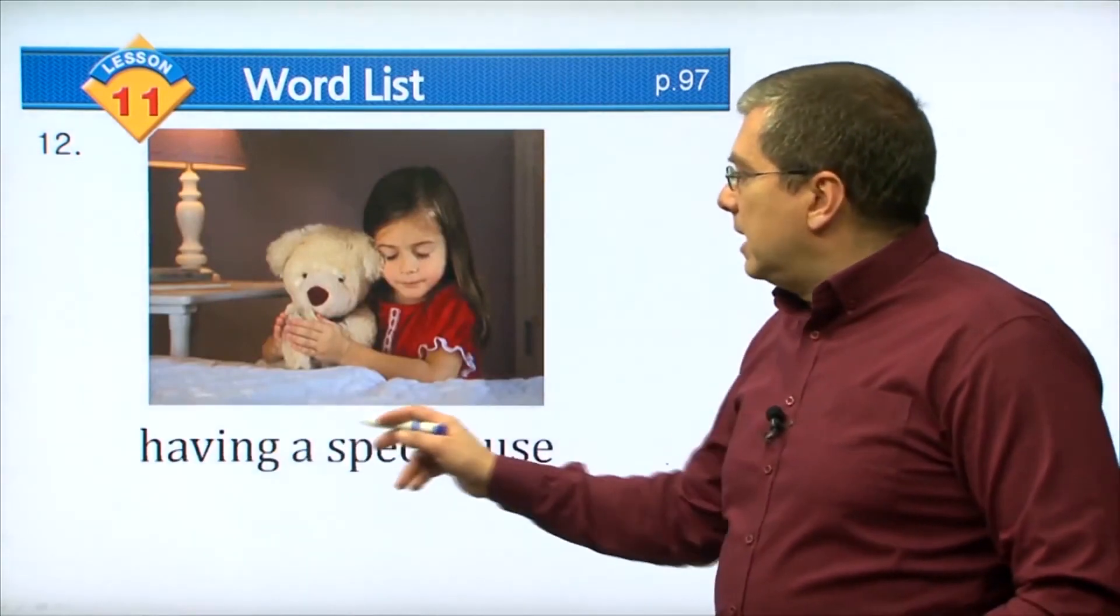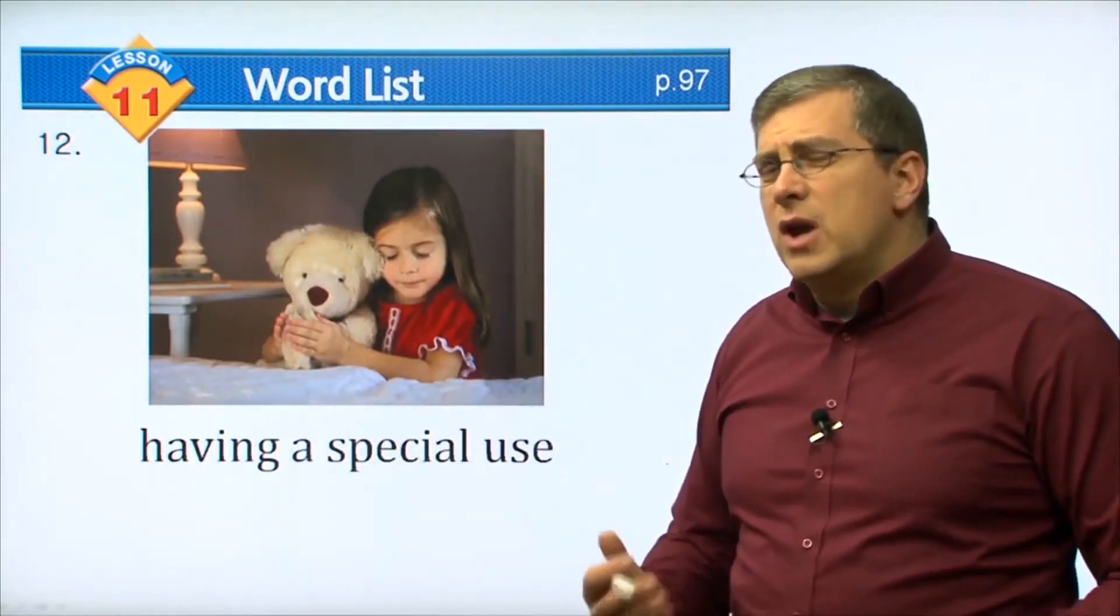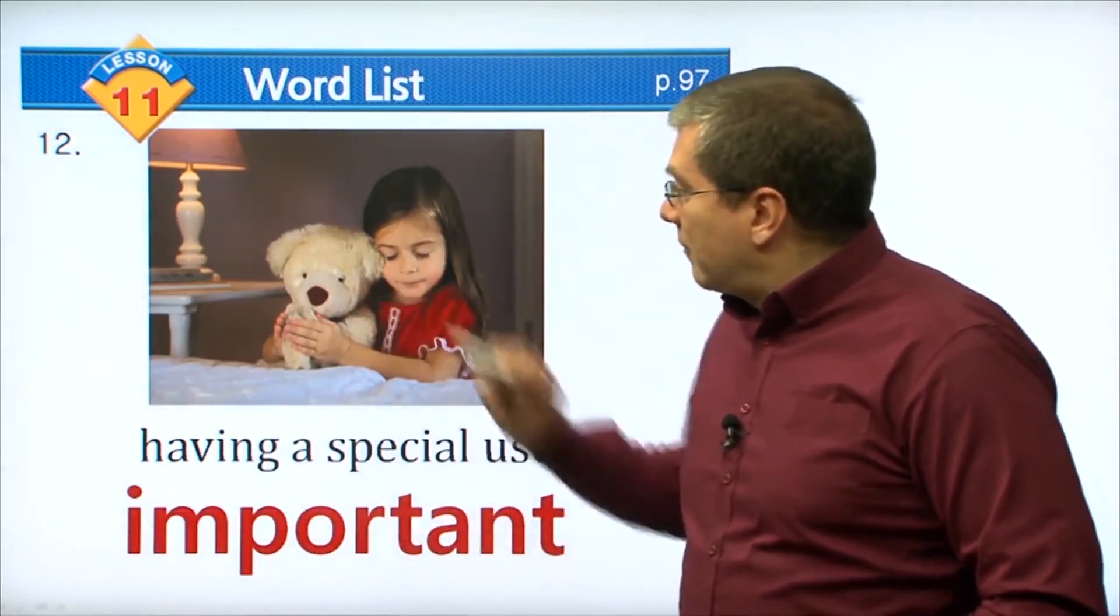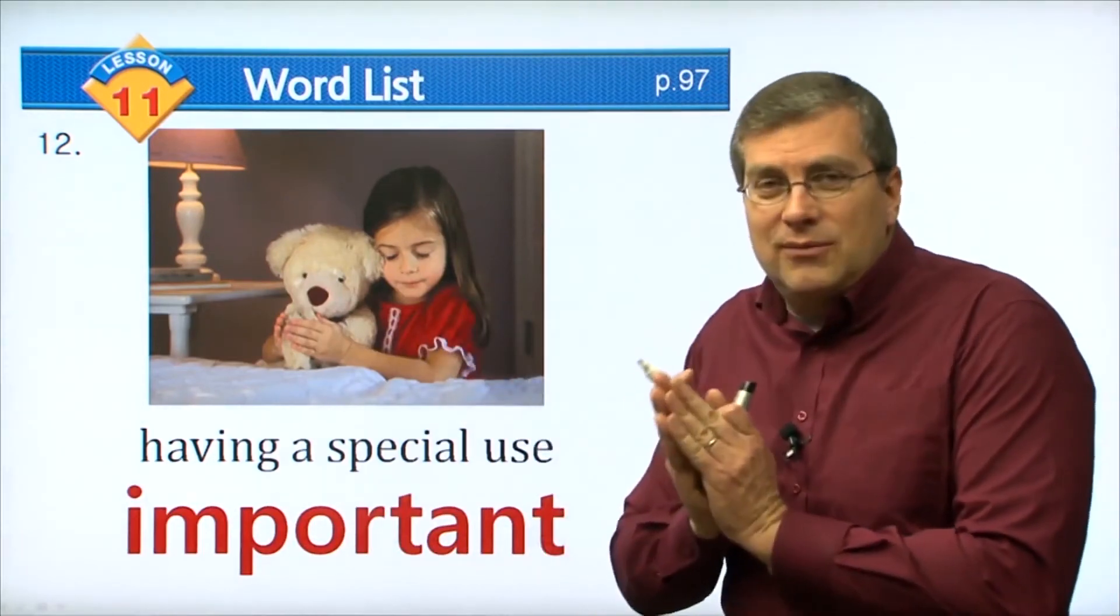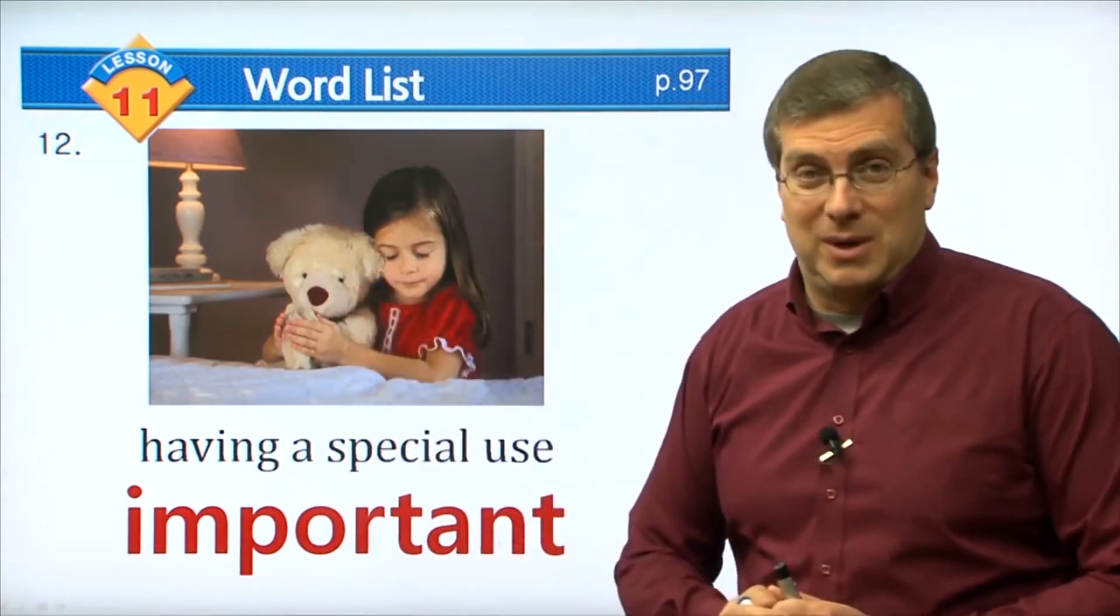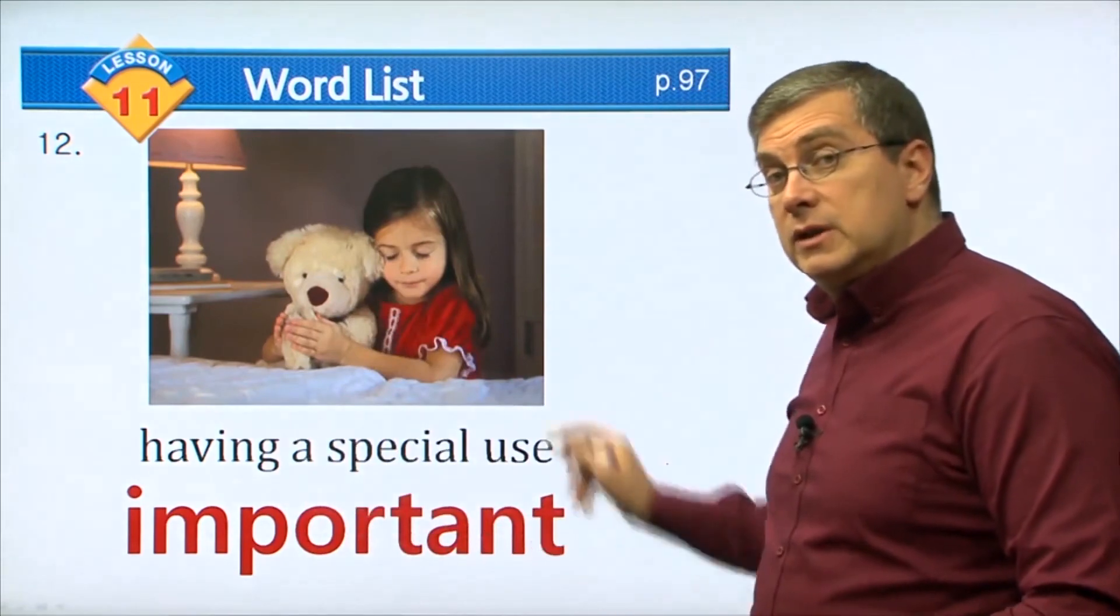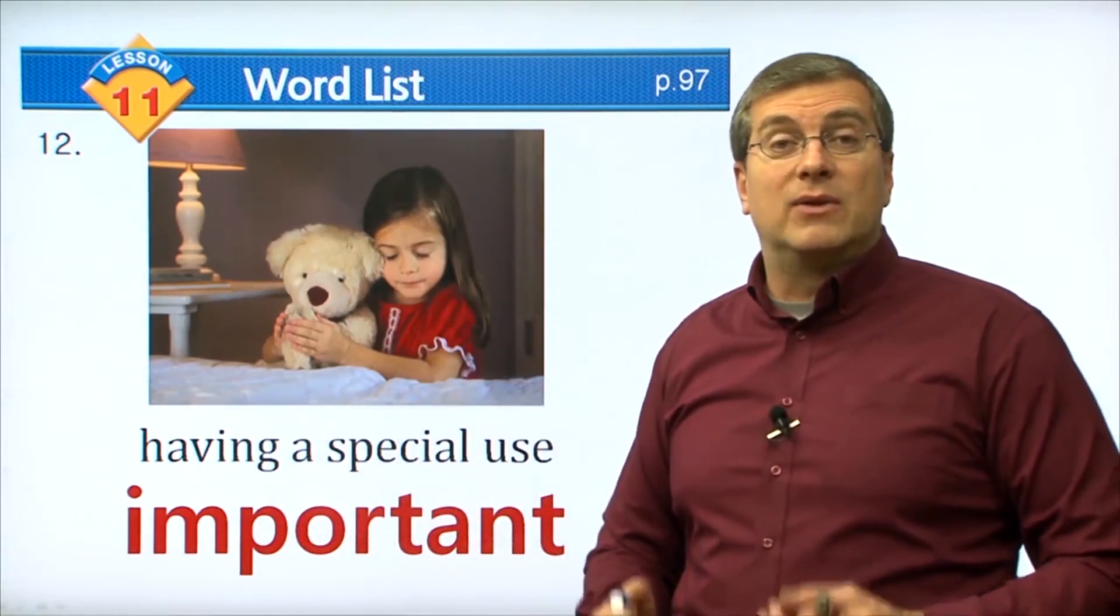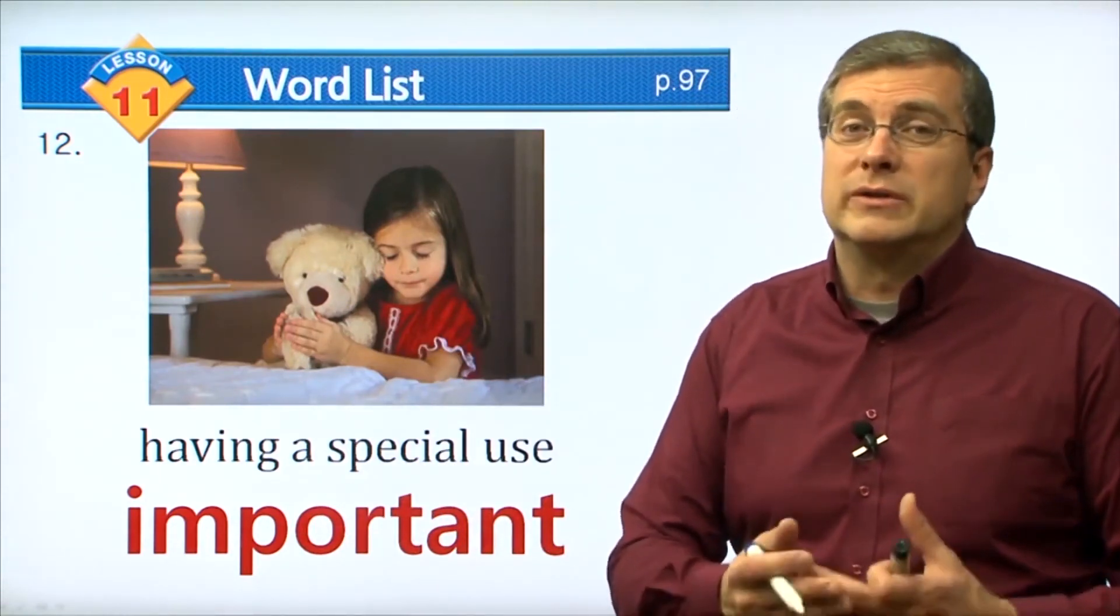Number twelve: having a special use. Something that has a special use, what do we call that? We can say it's important. Here we have a picture of a little girl getting ready for bed. Maybe she's praying, and she has a little teddy bear with her. The teddy bear is very important to the girl. What is important in your life? Do you have a toy that is your favorite toy? It's very important to you. Maybe you have a book that you like to read. That book is important.